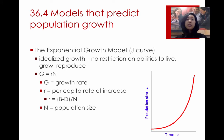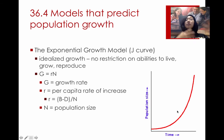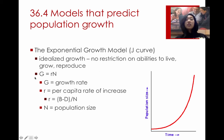The first model is the exponential growth model, also called the J-curve or J-shaped curve. This is an ideal form of population growth that assumes there is no restriction on the ability to live, grow, or reproduce. Over time, the species just keeps exponentially increasing because the offspring keep having more offspring, and there's no limit to this growth. This mathematical model is characterized by G equals Rn.